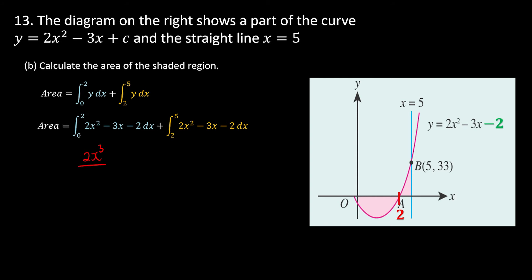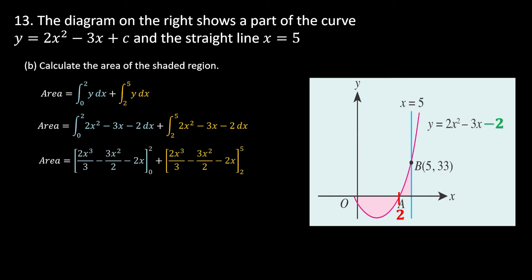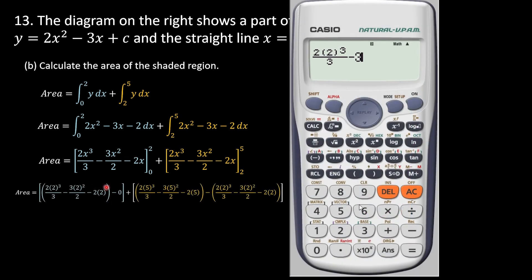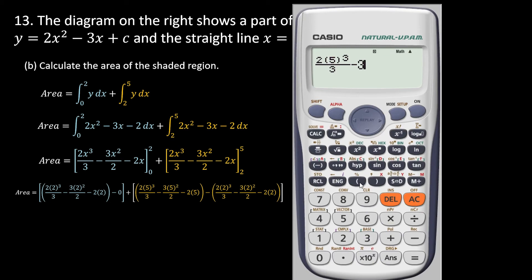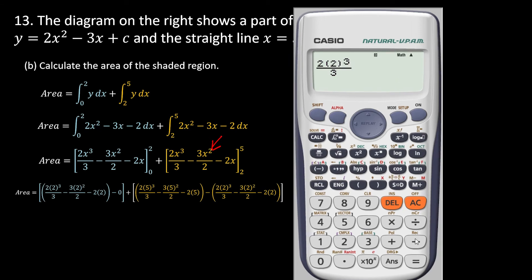We increase the power by 1 and divide by the new power for all terms, including the constant term paired with x. The limits 0 to 2 apply. The same equation is used for both parts, so we copy the antiderivative and apply the upper minus lower limit for each interval.